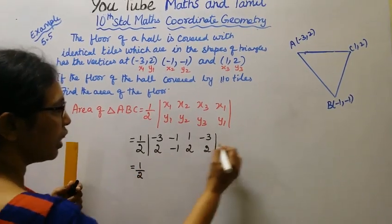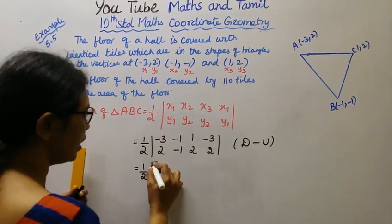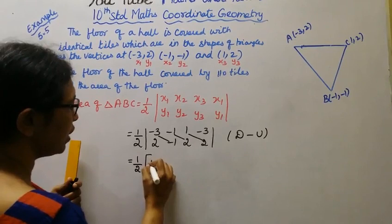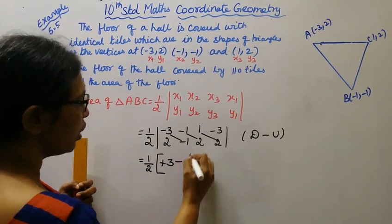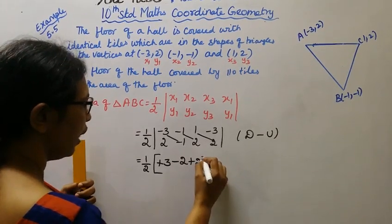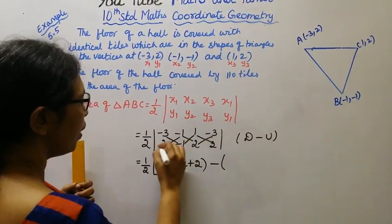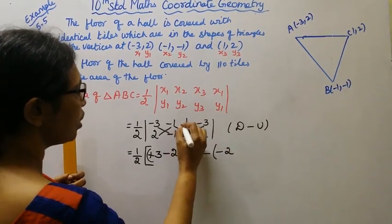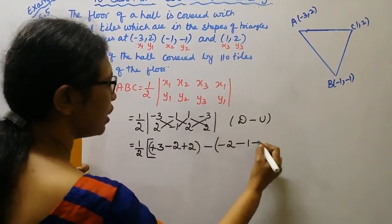1 by 2. Now, 1 into 2 is 2. It is downward. Minus, upward. It is upward. Plus into minus, minus. 2 into 1 is 2. Minus into plus, minus. 1 into 1 is 1. Plus into minus, minus. 2 into 3 is 6.